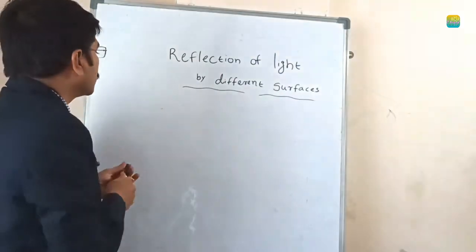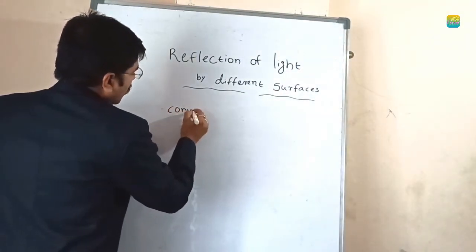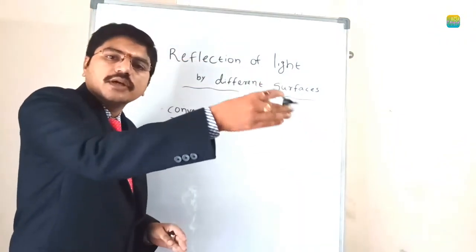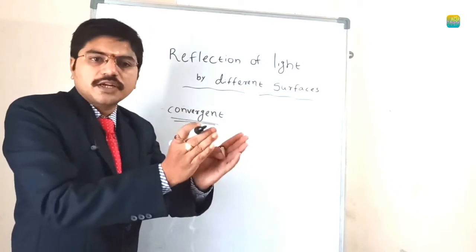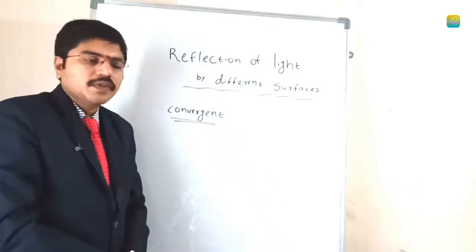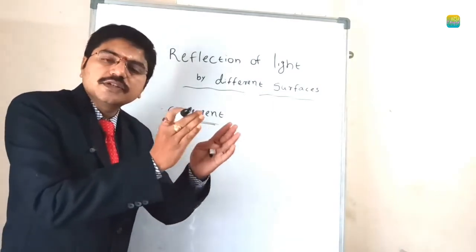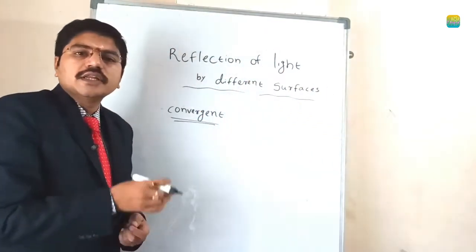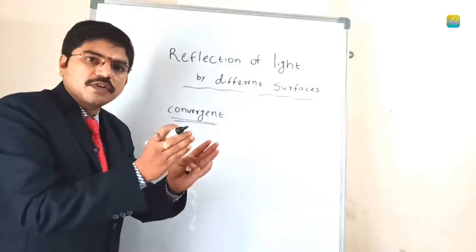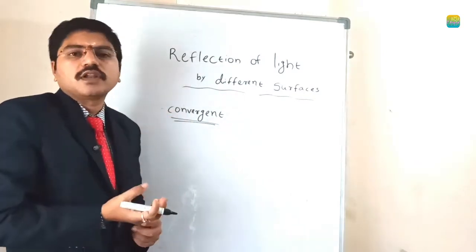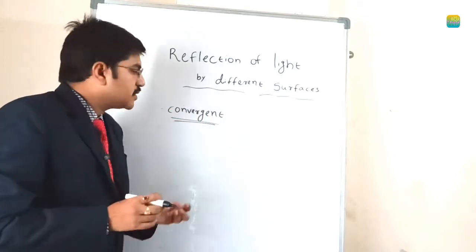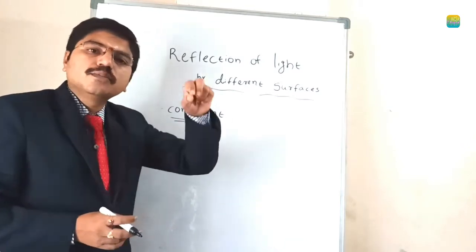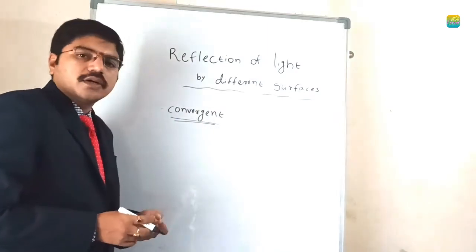First of all we will discuss what is meant by converge and diverge. Convergent means after reflection, if any ray falls on a particular object, all rays of light will meet at one place. That activity is called convergent. For example, if you release any source of light on a particular object, after reflection the light will appear as a bright focus. So the definition is: after reflection, all rays will meet at one place — that is said to be convergent.